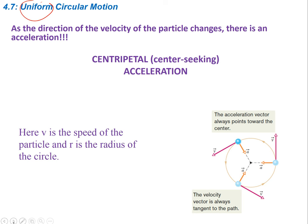As the direction of the velocity of the particle changes, there is going to be acceleration, even if the speed stays the same. What we call this in circular motion is centripetal acceleration, and centripetal means center-seeking. If you notice the circle, we have an object in circular motion — the acceleration is always going to be directed towards the center of the circle because it's constantly changing direction. At any point on the circle, the velocity of this object is going to be tangent to the circle, and what keeps it turning is this acceleration acting towards the center. Of course, with an acceleration there must be a force, and in a couple of slides we'll look at what that force is.